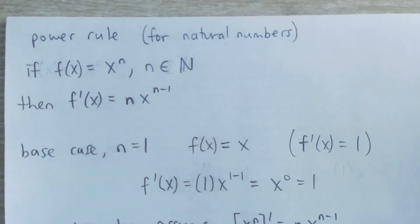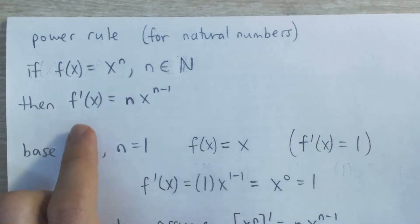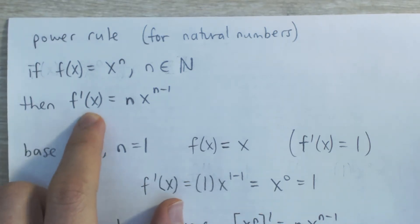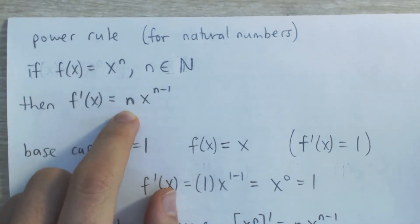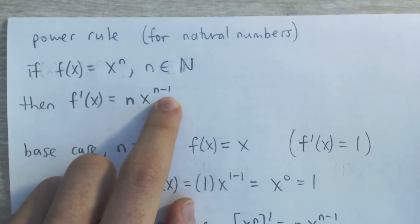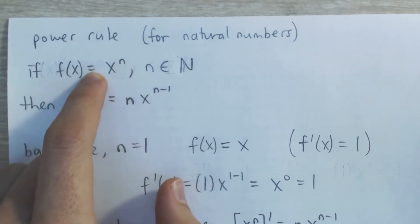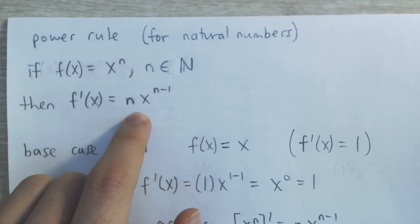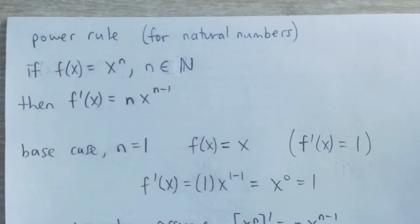This theorem is true for all real numbers, but here I'm only going to prove it for natural numbers, which means numbers 1, 2, 3, 4, 5, etc. Then the derivative of that function is n times x to the n minus 1, which means you bring that power to the front as a coefficient and decrease the power by 1. The way I'm going to prove this is using mathematical induction and the product rule for derivatives.